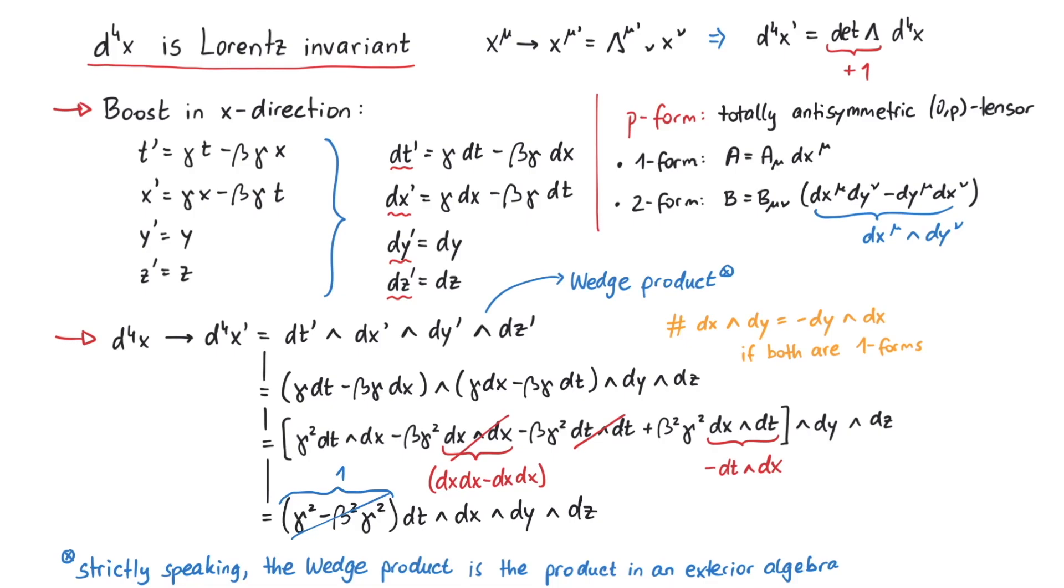Therefore, d4x is Lorentz invariant, as promised. And that's pretty much it for this video. Thanks for watching.